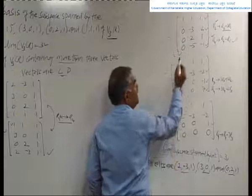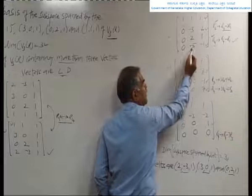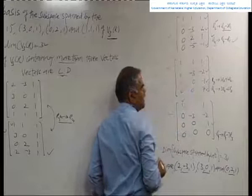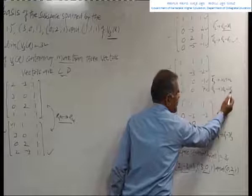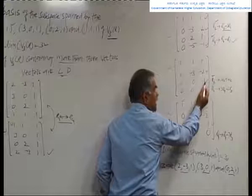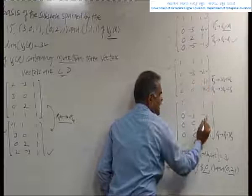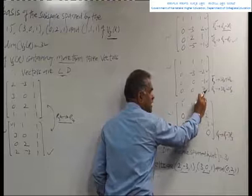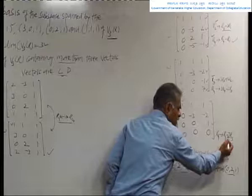Now we have minus 3 in the second column. We need to make the elements 2 and 5 become 0 using the second row's second column element. Operating on the third row: 3R3 plus 2R2 on R3. Operating on the fourth row: 3R4 minus 5R3. After this, the third row gives (0, 0, -1) and the fourth row gives (0, 0, 7). We then multiply the third row by minus 1 to get (0, 0, 1). Finally, applying R4 minus 7R3 on the fourth row gives (0, 0, 0).